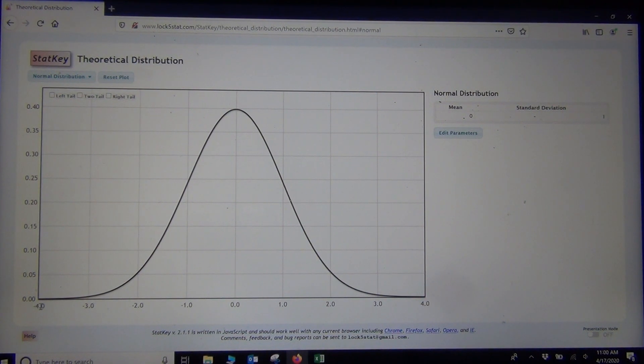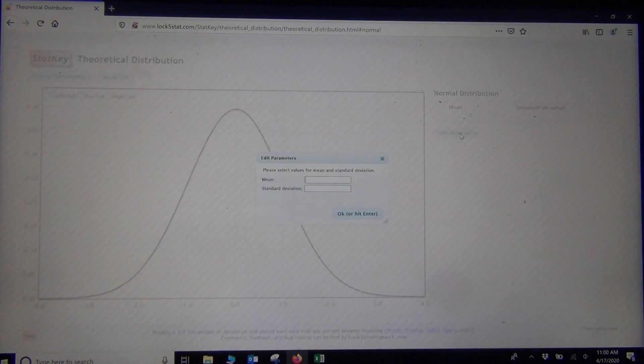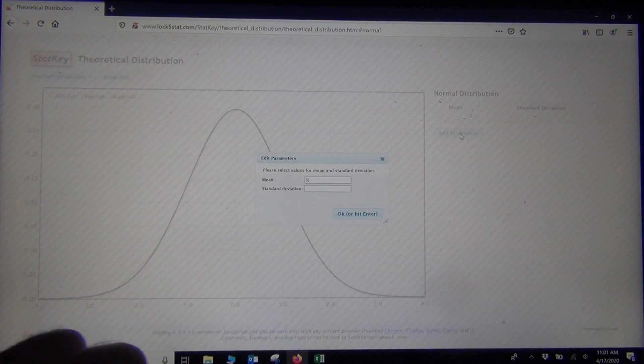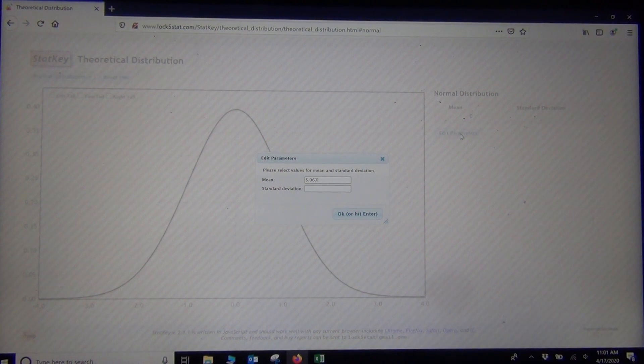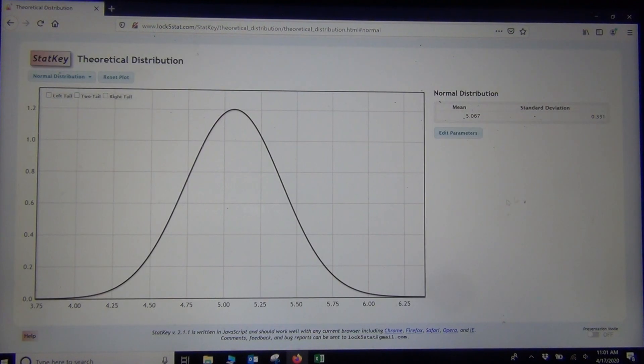But in our example here with the wrist circumferences, we didn't have a mean of 0 and a standard deviation of 1. But we can change that. Just click on Edit Parameters. So if we click Edit Parameters, and let's suppose we're going with, again, a mean was 5.067. So I'm just going to type that in, and a standard deviation of 0.331. There we go. So I just type in the mean and standard deviation of the normal data.